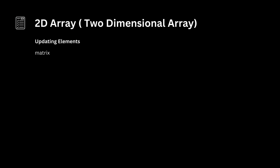Updating elements: matrix is the name of the two-dimensional array. Index 1 accesses the second row and index 2 accesses the third column — both zero-based. The equal sign is used for assignment, and 20 is the value assigned to that position. So this line updates the element in the second row and third column of the matrix to 20. After execution, the matrix becomes: 1, 2, 3, 4, 5, 6, 20, 8, 9, 10, 11, 12.